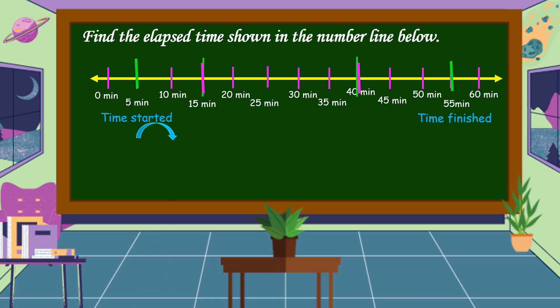So, let's count by fives: 5, 10, 15, 20, 25, 30, 35, 40, 45, 50. Therefore, the elapsed time is 50 minutes.